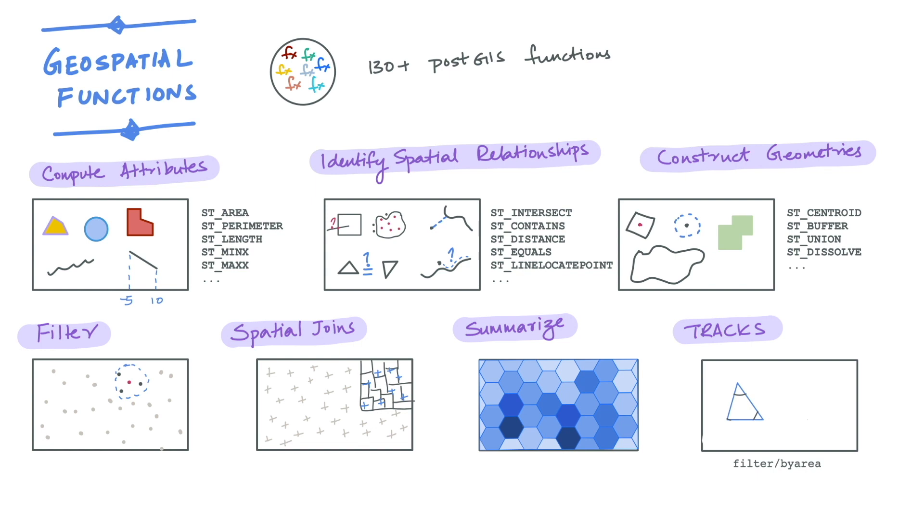Now you might wonder how this is different from filtering non-track data based on a spatial relationship. The key difference here is that if we overlaid the points without the timestamp, there might be cases where the points don't intersect with the input polygon.